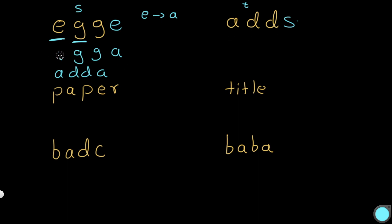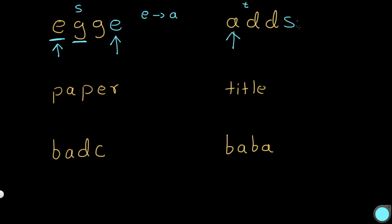One way to look at this question is that both occurrences of the same character must map to the same thing. The first e at its index corresponds to a in string t, but the second e at the last index corresponds to s. Since they correspond to different things, no matter what we replace e with, we are not going to get the same value, since we can only replace it with one letter. That's going to be how we find a solution.